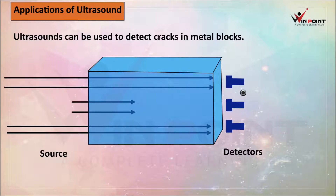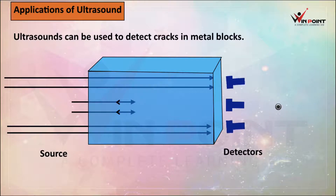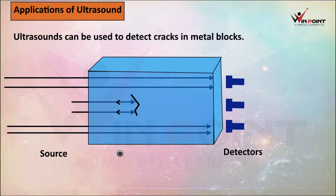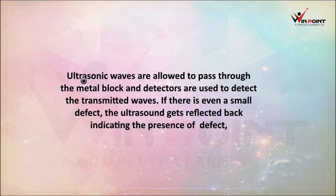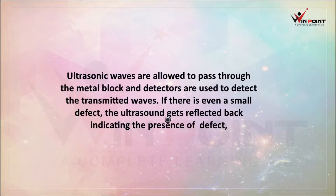All the ultrasonic sounds reach the detectors. These two detectors will show an indication of ultrasonic sound. If one detector is not showing an indication, it means there is a crack — that's why the ultrasound bounced back. Ultrasonic waves are allowed to pass through the metal block, and detectors are used to detect the transmitted waves. If there is even a small defect, the ultrasound gets deflected back, indicating the presence of a defect.